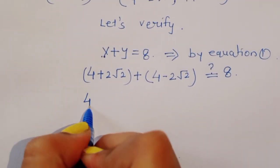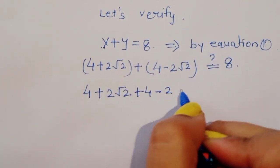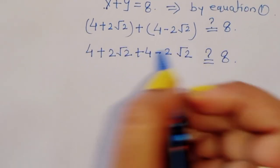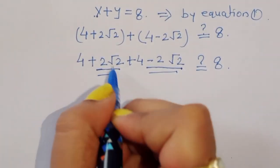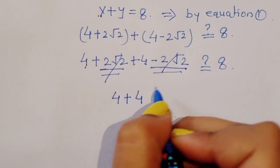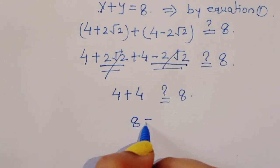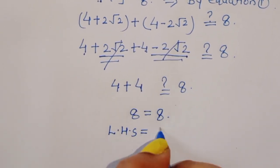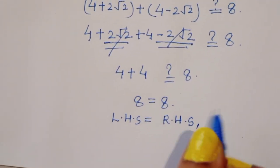The 2 root 2 terms cancel, leaving 4 plus 4, which equals 8. So 8 is equal to 8 — LHS is equal to RHS. Now let's verify with equation 2: x times y is equal to 8.